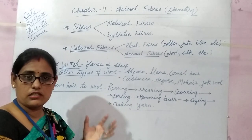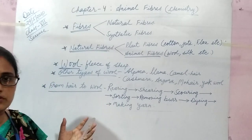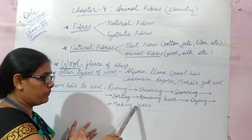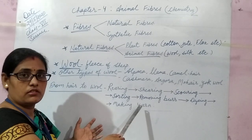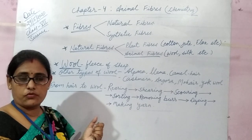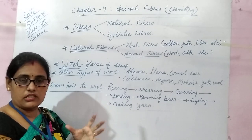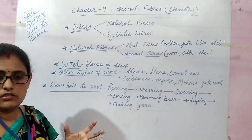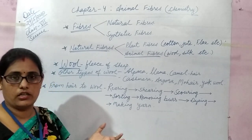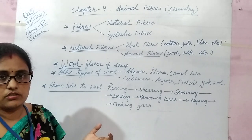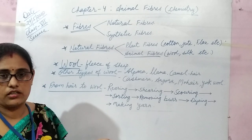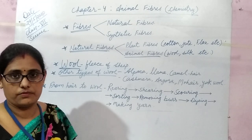The last step is making yarn. In this process, the wool is finally prepared into yarn by spinning. The yarn is then weaved or knitted into sweaters or woolen clothes. That's all for today's topic. Have a nice day.